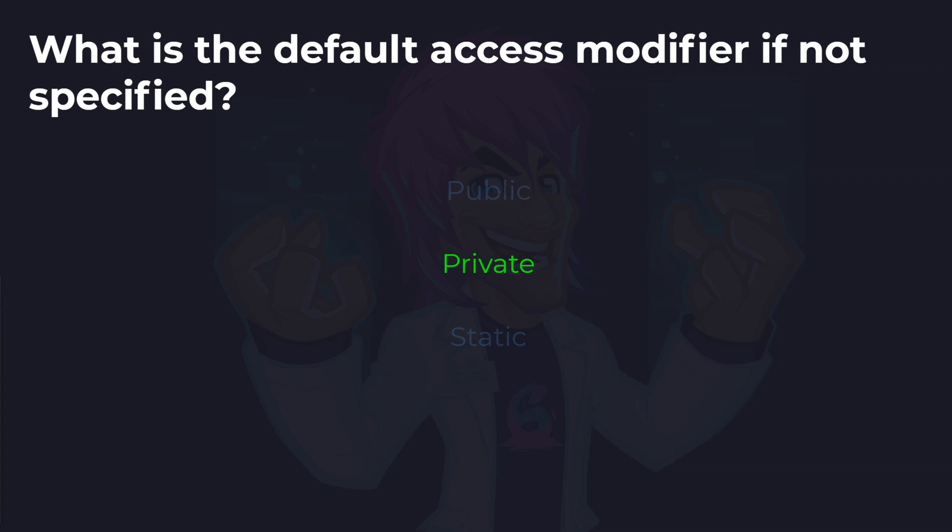And the answer is private. When nothing is specified — as in public, private, internal, sealed, or various other access modifiers, with the exception of static which can be included as well — the default is always private. When we see the main function that has just got static but doesn't contain public, private, sealed, or internal, the default is always private.